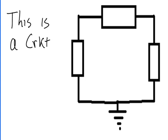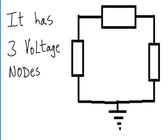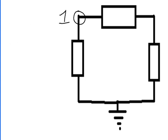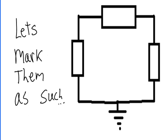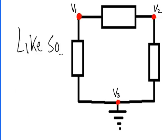This is a circuit. It has three voltage nodes. One, two, and three. Let's mark them as such, like so.